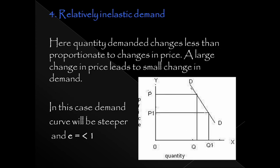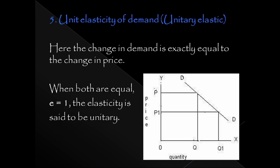The fourth type is relatively inelastic demand. Here, a very big change in price leads to only a small change in quantity demanded. Price changes from P1 to P3, but the demand changes only slightly. The demand curve is steep. E is less than 1.